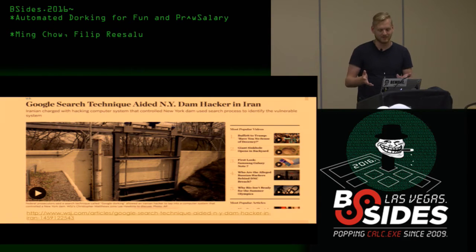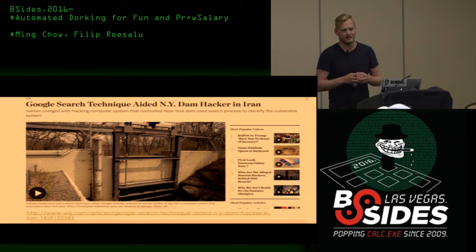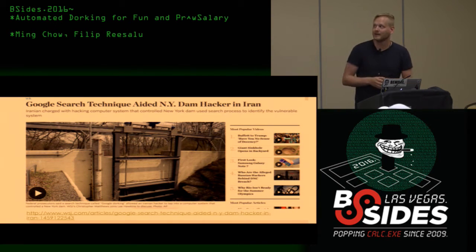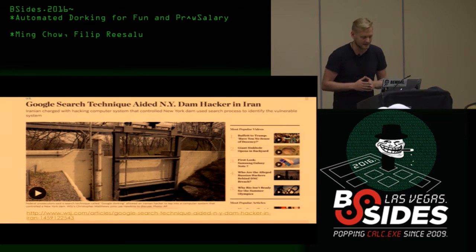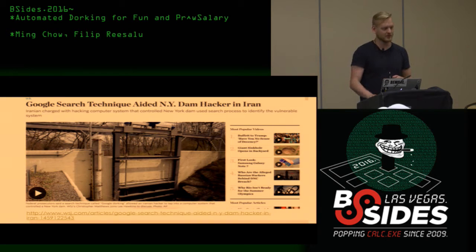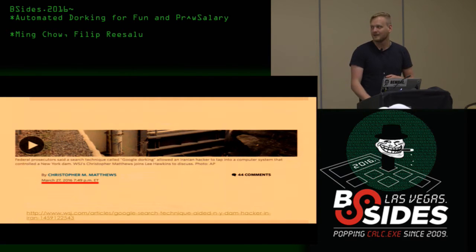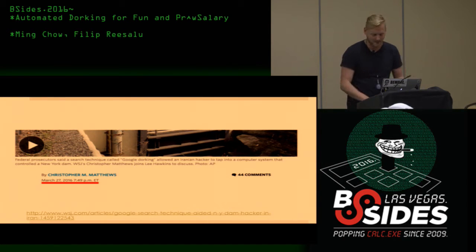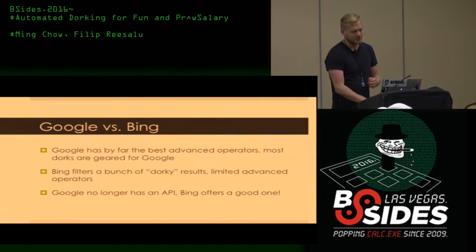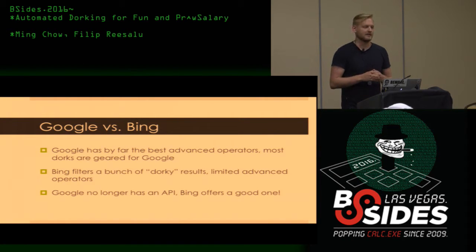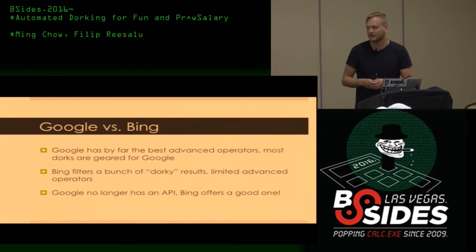I was looking for a good example of this old dorking thing. There was an article: 'Google search technique aided New York dam hacker in Iran.' You might think that's pretty cool or pretty bad — but when you look at when it was published, it was just a few months ago. So that's a bit of a fail. When most people think dorking, they think Google searching or normal text search. I just want to highlight some of the issues with these things.